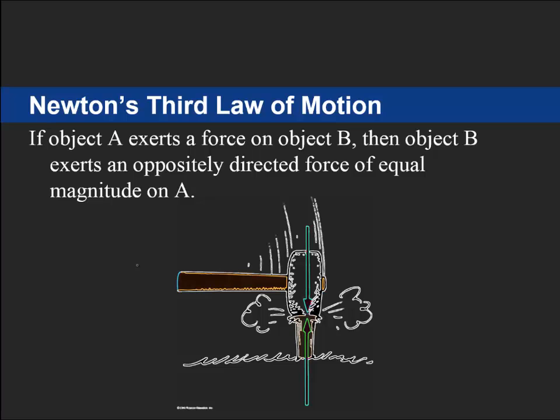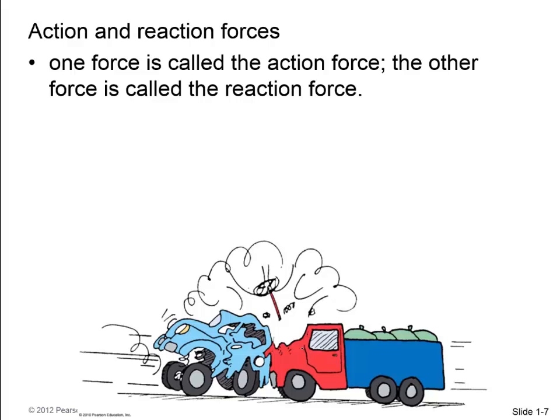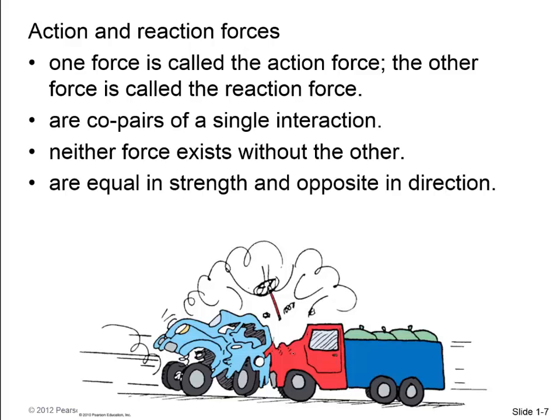Newton's third law of motion says that if object A exerts a force on object B, then object B exerts an oppositely directed force of equal magnitude on A. For example, the hammer pushes downward on the nail with some force. There's another force of the nail pushing upward on the hammer, exactly the same magnitude force, but in the opposite direction. Sometimes these are called action and reaction. One force is called the action. Maybe the truck hits the car. The reaction would be the car hits the truck. But these are co-pairs of a single interaction, the truck-car interaction. Neither force can exist without the other. It doesn't matter which you call the action or the reaction. They're always equal in strength and opposite in direction, and they always act on two different objects.